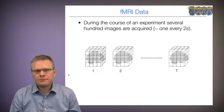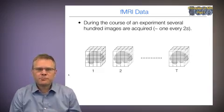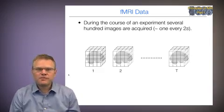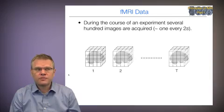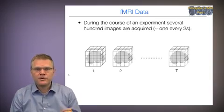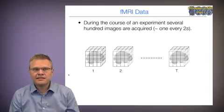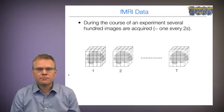During the course of an experiment, several hundred of these types of brain volumes are acquired, one roughly every two seconds or so. So basically, what we have is we make 100,000 measurements over the brain at one time point, then two seconds later, we do it again, et cetera, et cetera, for a couple of hundred time points.